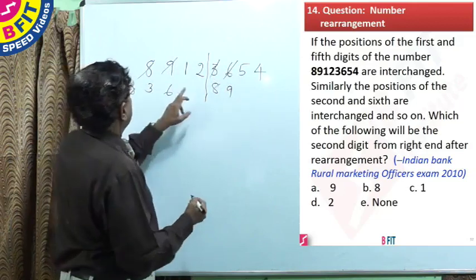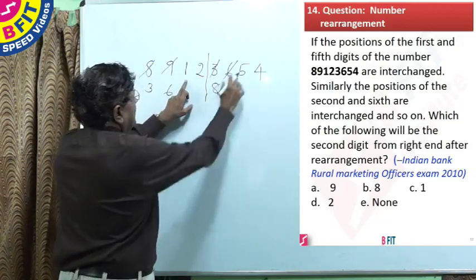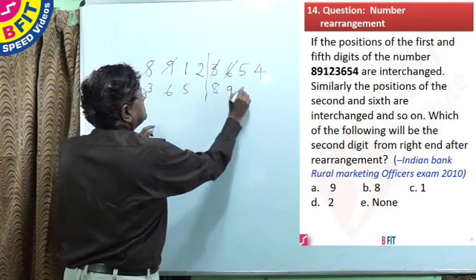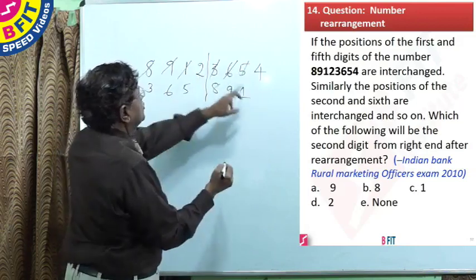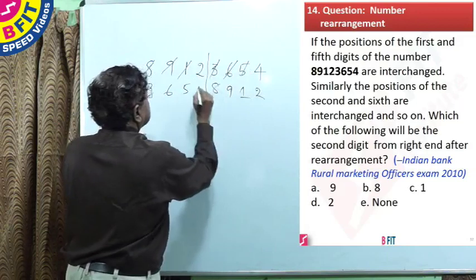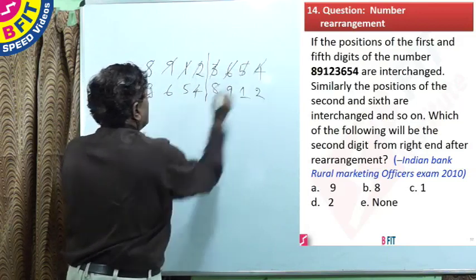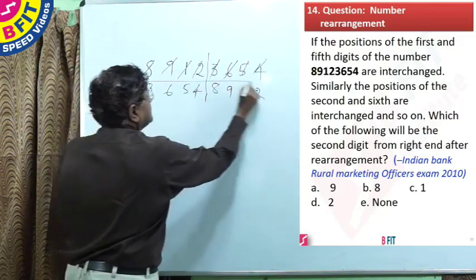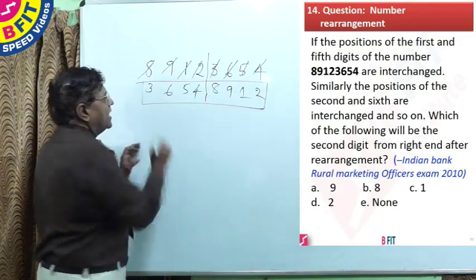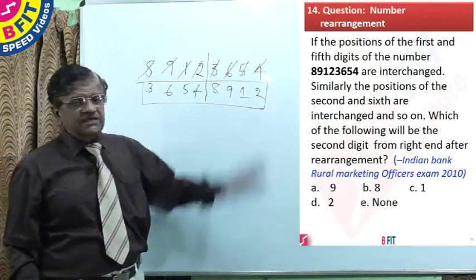So, 5 and 1 are interchanged. Then, 2 and 4 are interchanged. Now, we have this number in which we have interchanged all the numbers as suggested in the question.